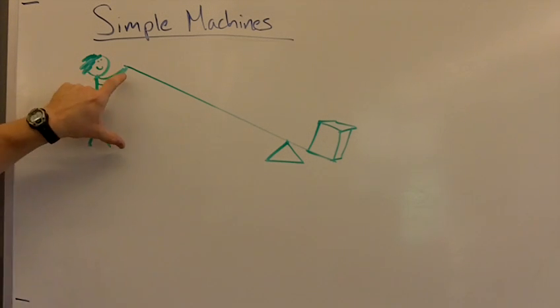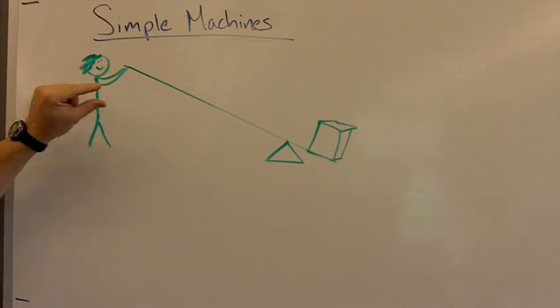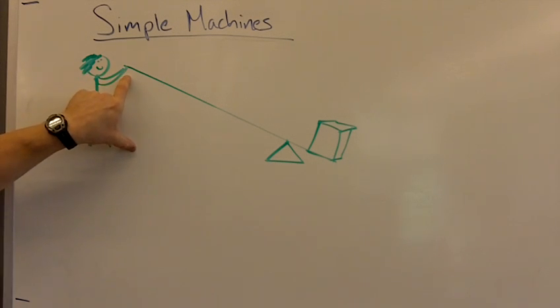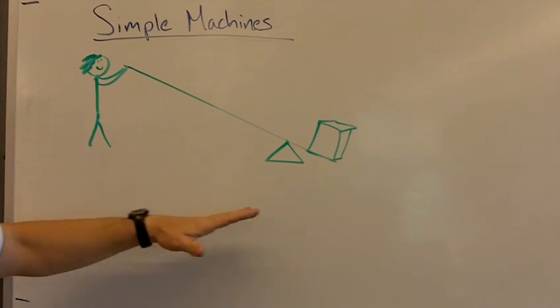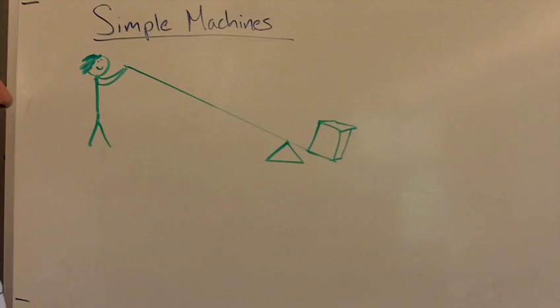A machine is going to make it so that they apply a small force over a long distance to do a certain amount of work. That work that they put into it is going to be equal to the work that comes out on the other end.